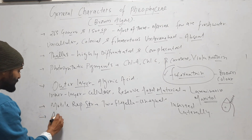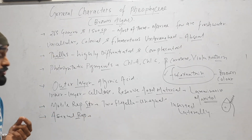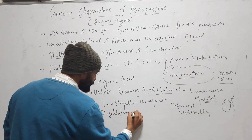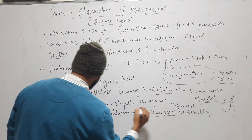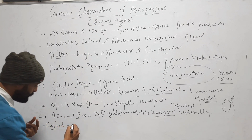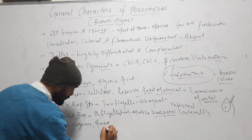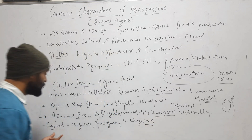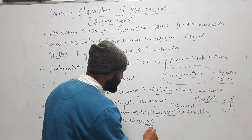Asexual reproduction always occurs through biflagellated motile zoospores. Sexual reproduction occurs through isogamy, anisogamy, or oogamy — meaning sexual reproduction may be of isogamy type, anisogamy type, or oogamy type.